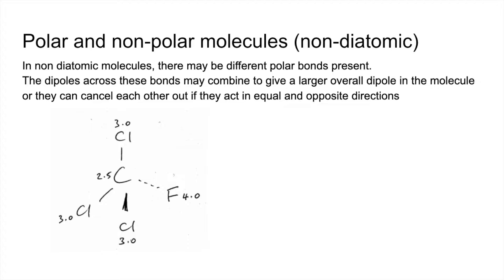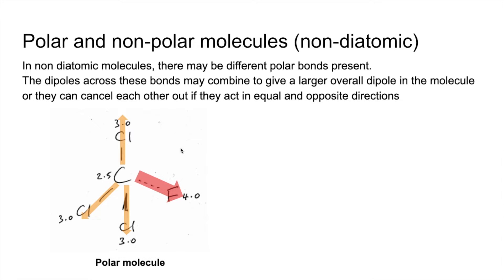In trichlorofluoromethane, we've got C-Cl bonds which are polar due to the electronegativity difference, and a C-F bond which is also polar. The three C-Cl dipoles are identical in magnitude, operating in the directions shown by the arrows. The C-F dipole is greater and operates in a different direction, so there will be an overall dipole on this molecule — the dipoles can't cancel, making this a polar molecule, with the fluorine slightly more negative than the carbon.